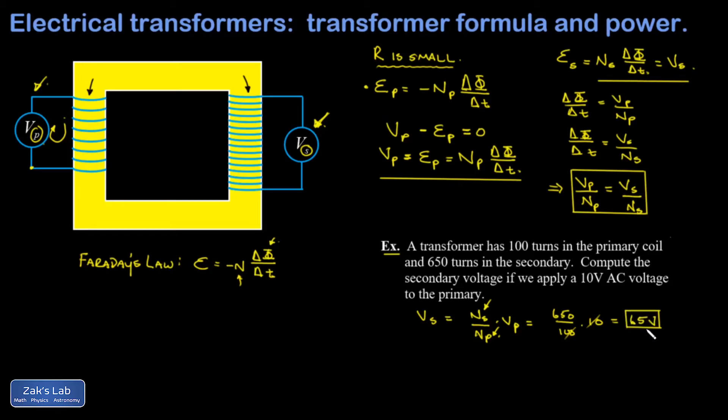So one really important point here is that transformers only work with alternating current because we're relying on flux changes to induce voltages. If you run a DC voltage through the primary coil, nothing is going to happen on the secondary side because there are no flux changes happening. And this is one serious advantage of running alternating current for the power grid because you can manipulate the voltages as much as you want. And I'll do another example in the near future on how running our major power transmission lines at high voltage actually saves a bunch of energy losses.